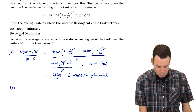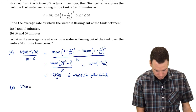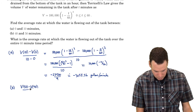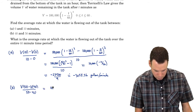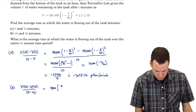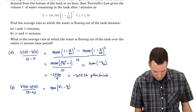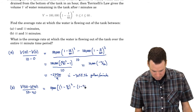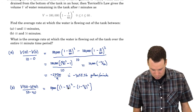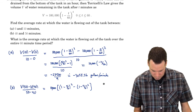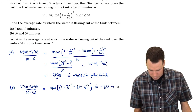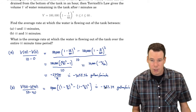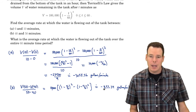What about from forty to fifty minutes? That's V of fifty minus V of forty, all over fifty minus forty. Plugging those numbers in — ten thousand times one minus five-sixths squared, minus one minus four-sixths squared — this gives approximately negative eight hundred and thirty-three point three four gallons per minute. So over the last ten minutes, we're losing about eight hundred gallons every minute.